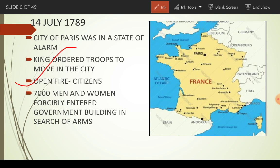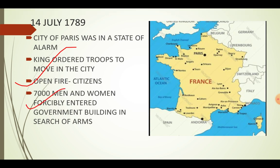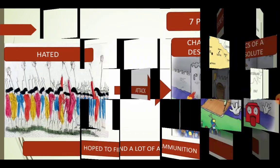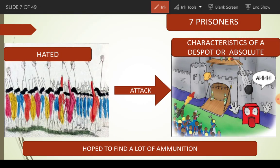But how could they fight without arms and ammunition? Lene ke liye, 7,000 men and women forcibly entered into a government building and wahaan se sara arms and ammunition lekar, they attacked on the prison of Bastille.